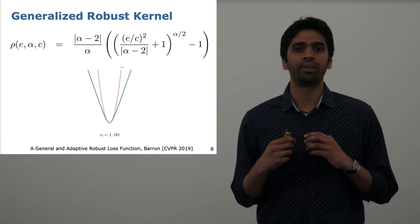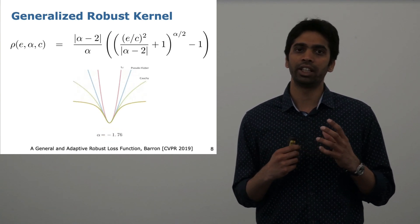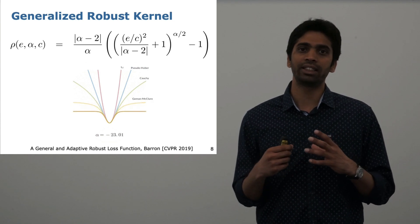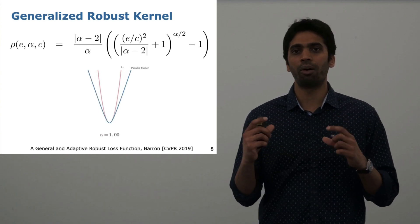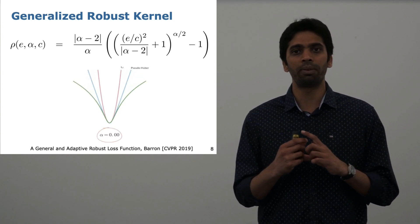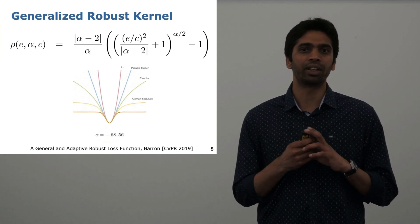Recently, Barron came up with a new generalized robust kernel which has an extra parameter shown by alpha. By changing this alpha, we are able to approximate different loss functions. This one formula, although it's a bit more complex, is able to explain several kernels.